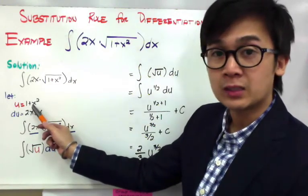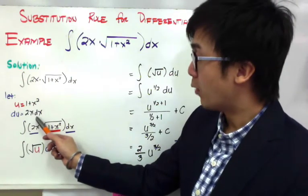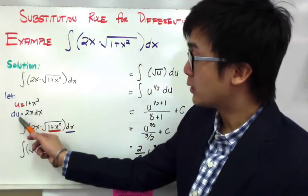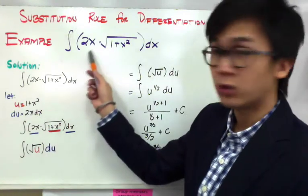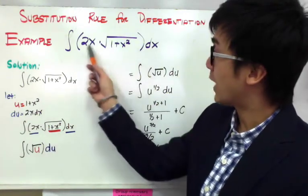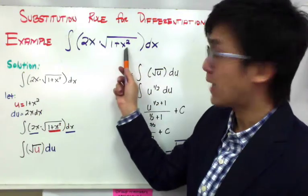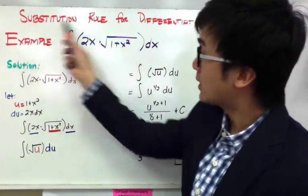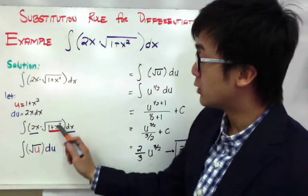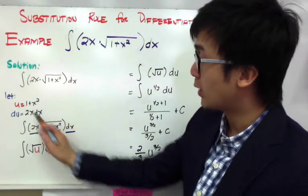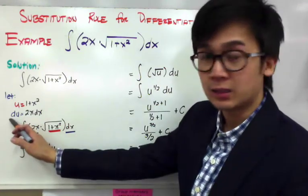Now I'm going to find the derivative of u, which is du = 2x dx. If you notice, the derivative of u, which is 2x dx, can be found in your original function. So by substitution, we replace 1 plus x squared with u and replace 2x dx with du.